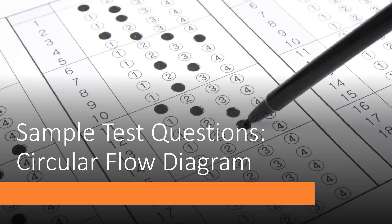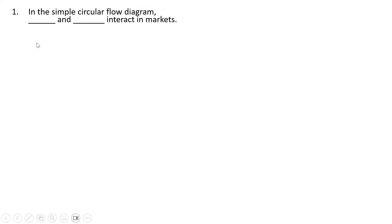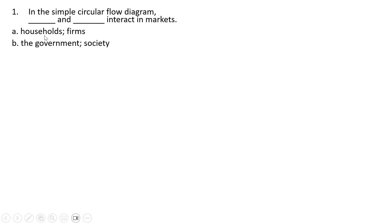Hello. In this video, we're going to do some sample test questions over the circular flow diagram. Question 1: In the circular flow diagram, blank and blank interact in markets. The correct answer is going to be A. Households and firms interact in the markets.